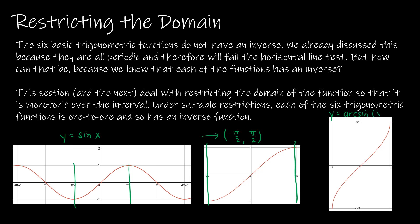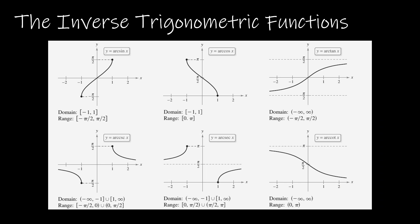So arcsine of x is the inverse of sine of x, but again using this restricted domain. The range of sine on this restricted domain goes from negative 1 to positive 1. And in true inverse fashion, it would then make sense that the domain of arcsine is negative 1 to positive 1, and that the range of arcsine is negative pi over 2 to pi over 2. So we're restricting the domain, which in turn restricts the range, and that is the case for all six of the functions.